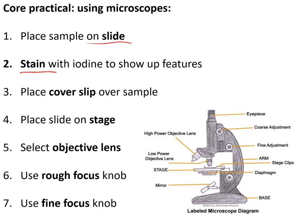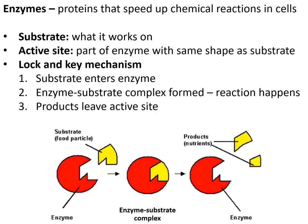In the microscope core practical, we placed a sample on a slide and stained it with iodine to show up the features. We placed a cover slip over the slide to protect it, placed the slide on the stage, selected the objective lens, then used the rough focus to get a rough image and the fine focus to get a clearly crisp focused image.